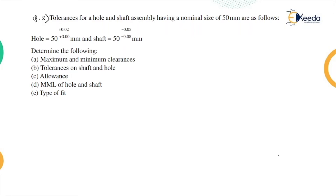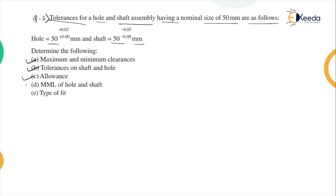In this lecture we will solve one numerical based on limit, fit and tolerance. The tolerances for a hole and shaft assembly having a nominal size of 50 mm are as follows: for the hole, 50 +0.00/+0.020; for the shaft, 50 -0.08/-0.05. We have to determine the maximum and minimum clearances, the tolerances on shaft and hole, the allowance, the maximum material limit (MML) for hole and shaft, and the type of fit.